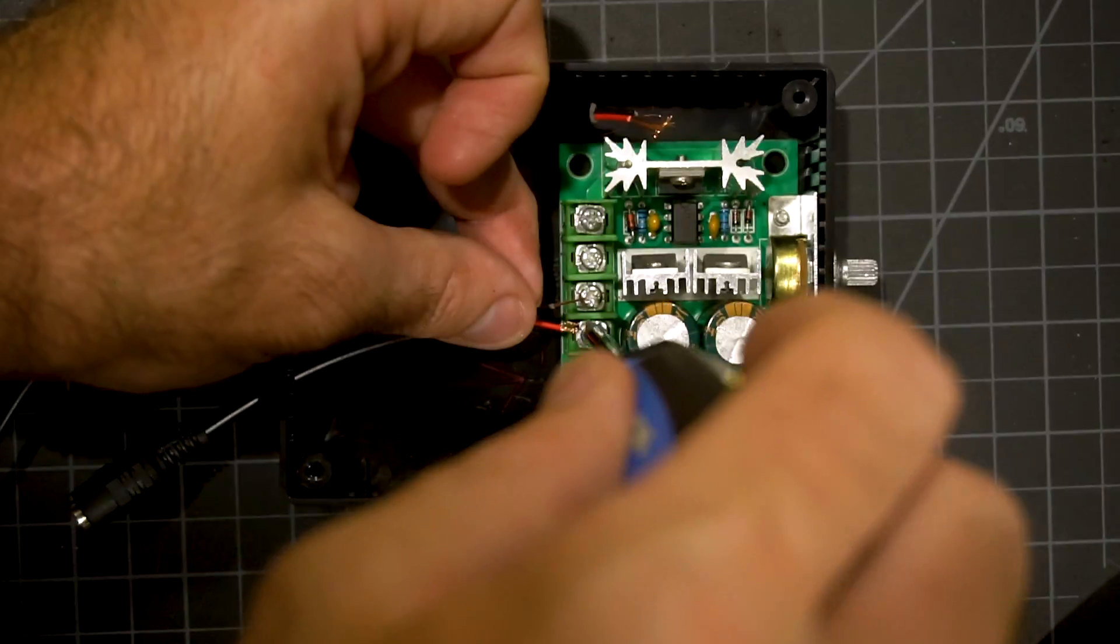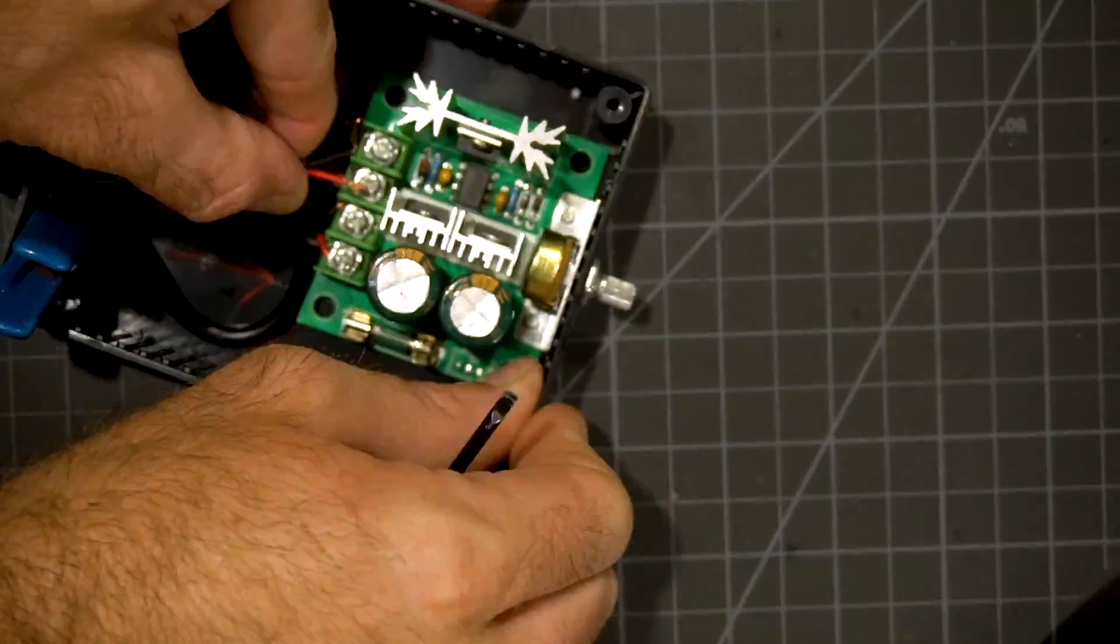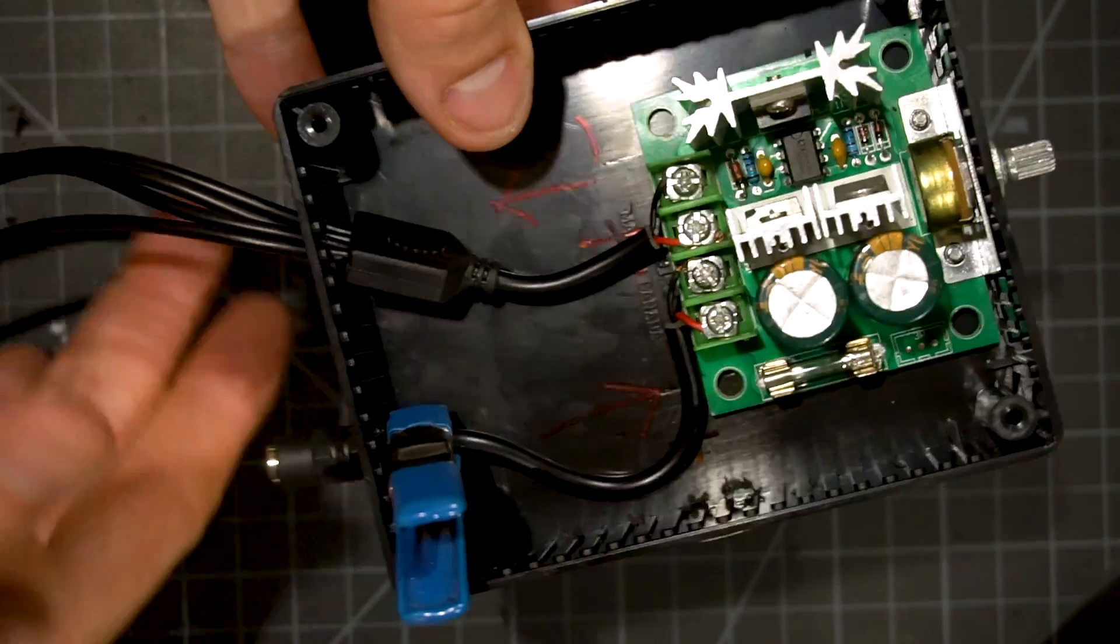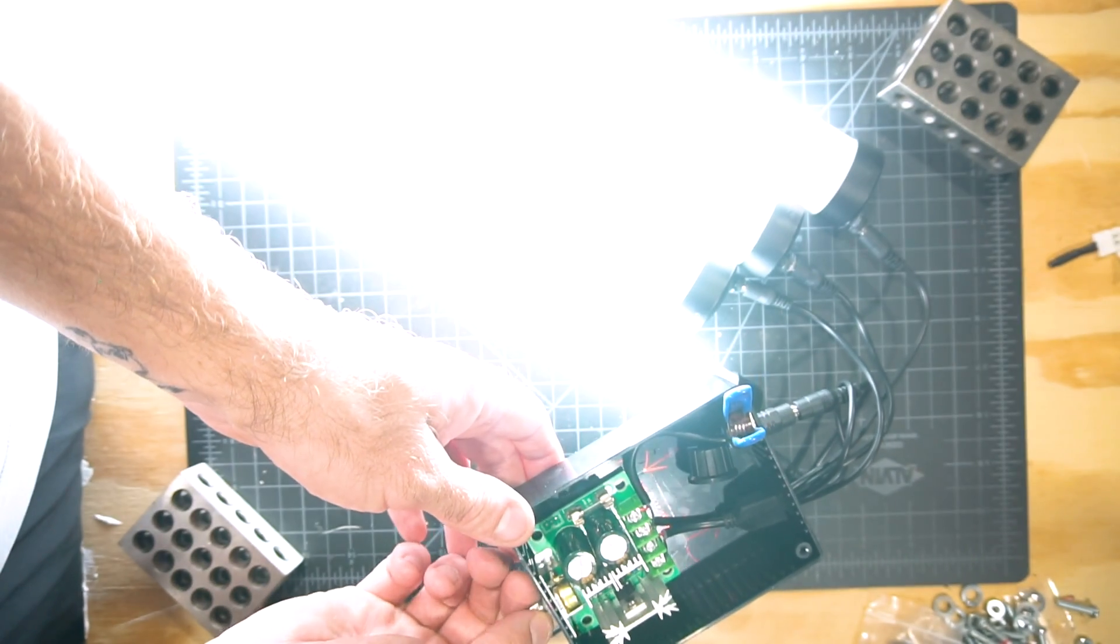Before we secure anything down though, let's hook everything up and make sure that it is all working. Attach your wires, and remember, black is negative and red is positive. Hook your lights up and test your dimmer out. Everything should be working great at this point.